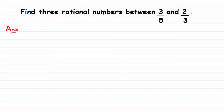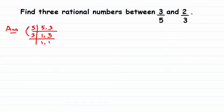If the denominators are not the same, make them the same by taking the LCM. So we'll take the LCM of 5 and 3. Since 5 and 3 are both prime, the LCM is simply their multiplication: LCM = 5 × 3 = 15.